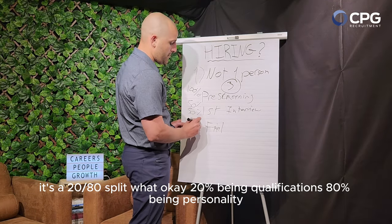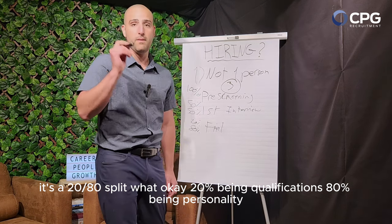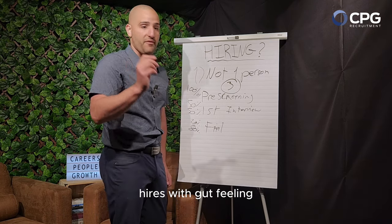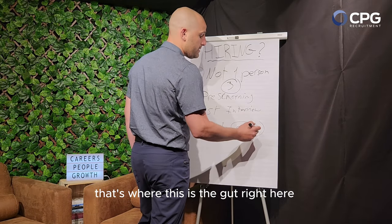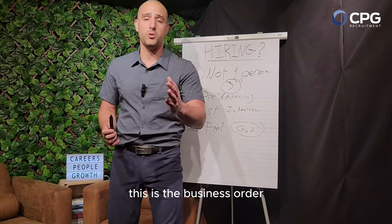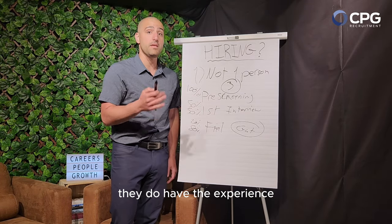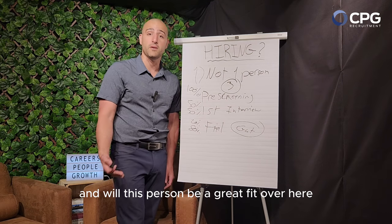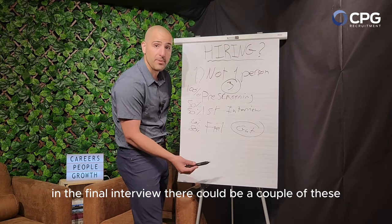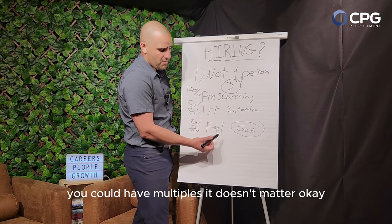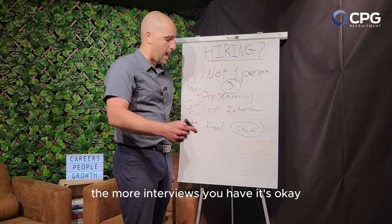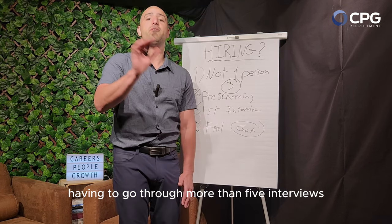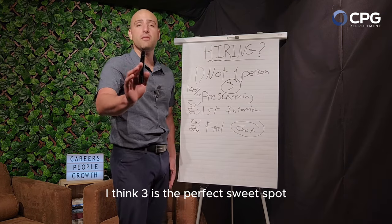In the final interview it's a 20/80 split — 20% qualifications, 80% personality. Will this person fit in? This is where the business owner hires with gut feeling. Triple-check the experience, but the main question is: will this person fit culturally and personality-wise? In the final interview there could be a couple of rounds — a hiring manager and then the business owner. I like four or five interviews but cap it at five; more than five is excessive. Three is the perfect sweet spot: pre-screen, first-round interview, final interview — let's make a decision.